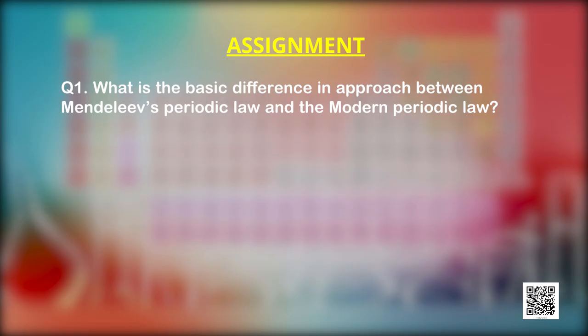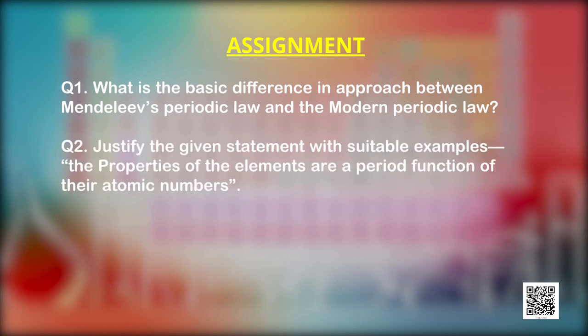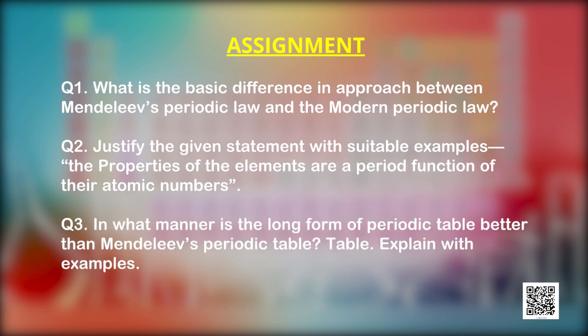Here is a task for you. Question 1: What is the basic difference in approach between Mendeleev's Periodic Law and the Modern Periodic Law? Question 2: Justify the given statement with suitable examples — the properties of the elements are a periodic function of their atomic numbers. Question 3: In what manner is the long form of the periodic table better than Mendeleev's periodic table? Explain with examples.